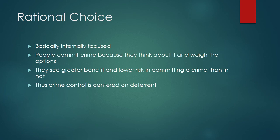The big one, which developed quite early on and is very popular among Americans, is rational choice. People commit crimes because they think about it, weigh the options, and see a greater benefit to committing the crime and a lower risk than in not. For example, about 10 percent of burglaries are solved. If you're a burglar with a 90 percent probability of not being caught, it might seem rational to do it. Thus, crime control under rational choice theory centers on deterrence — catching and punishing people.